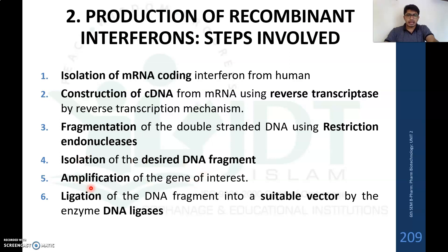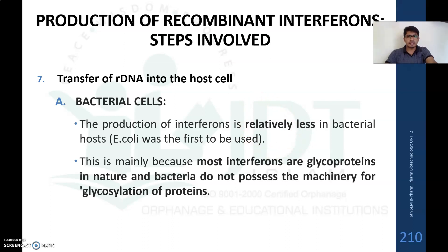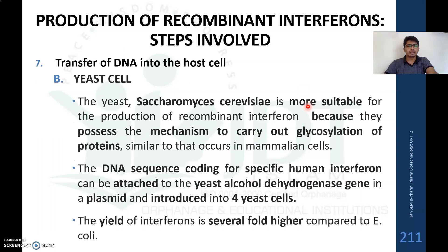The desired DNA fragment is amplified using gene amplification methods such as polymerase chain reaction (PCR). The amplified gene of interest is then ligated with a suitable vector using DNA ligase to produce a recombinant DNA. This recombinant DNA is transferred into a host cell — either bacterial or yeast. Using bacterial cells results in relatively less production because most interferons are glycoproteins and bacteria lack the glycosylation machinery.